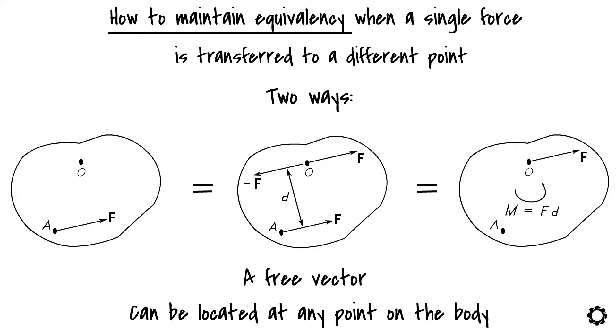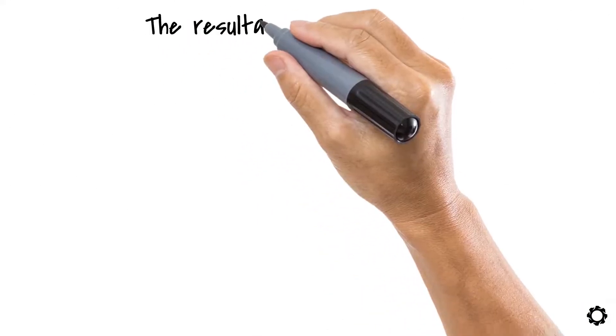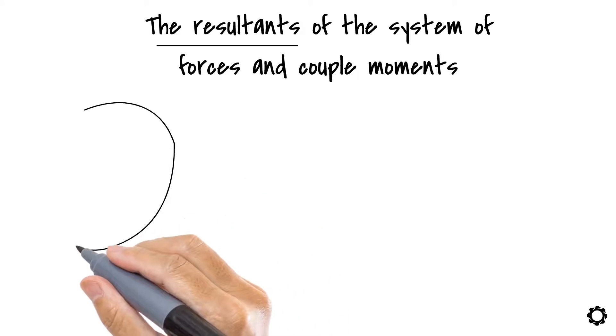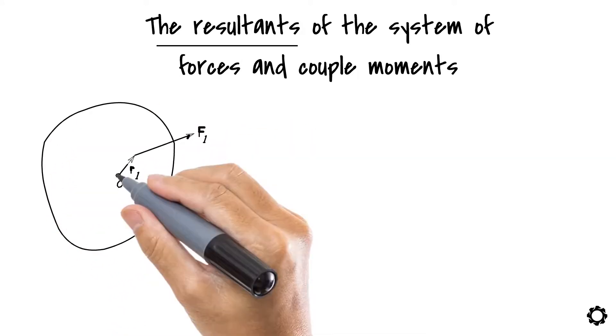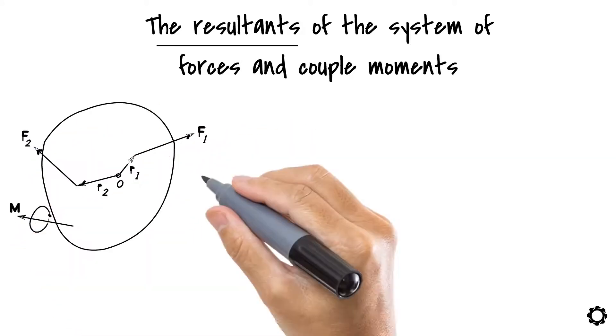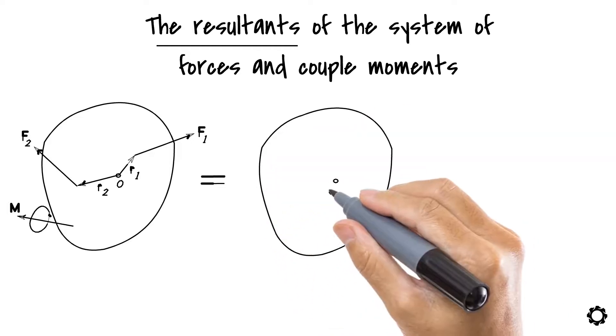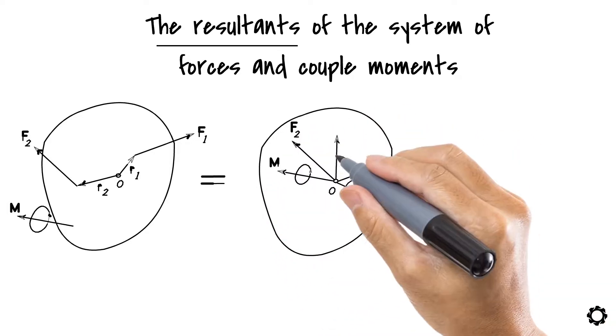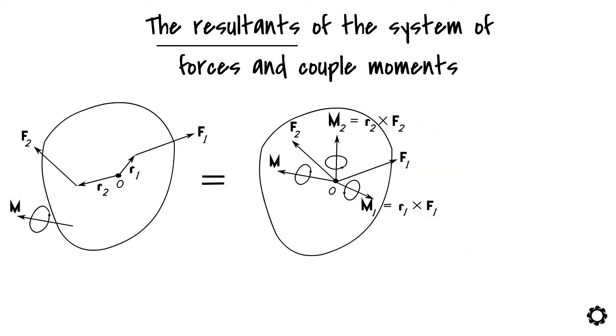Now we will move into the topic of how to form the resultants of the system of forces and couple moments. What you should know is that when there are multiple forces and couple moments being applied on the body, you can transfer each of these to act at a specific point O. You have to, however, also take into account the additional couple moments which are caused by the transfer of the forces.